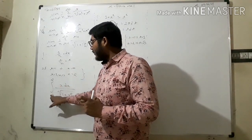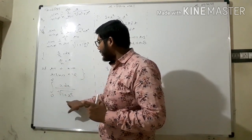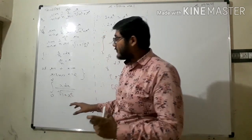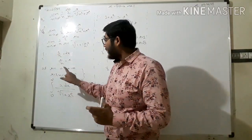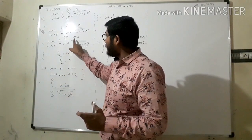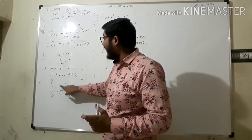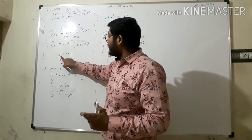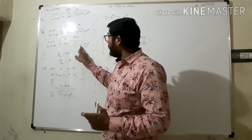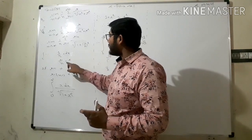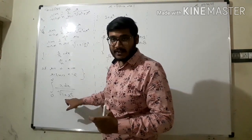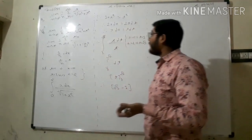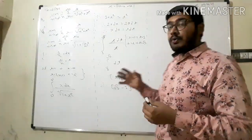So the integral is from zero to two of x dx divided by under root of one plus x squared. To explain: r upon n becomes x, one upon n becomes dx, and one plus r upon n squared becomes one plus x squared.